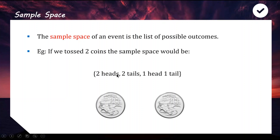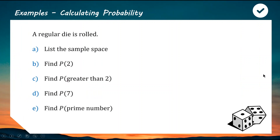Those are the three elements of our sample space. As a bonus question, think about why getting one head and one tail is actually more likely than getting two tails or two heads. Of these three outcomes, that one is the most likely — let me know in the comments if you think you know why.